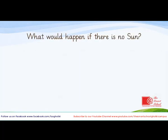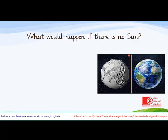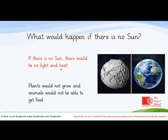What would happen if there is no Sun? Our Earth will look very different from what it is now. You see, this is a living planet with greenery and water — none of this would be there if there is no Sun. If there is no Sun, there would be no light and no heat. Plants would not be able to grow and animals would not be able to get food. Eventually, all living things would die.